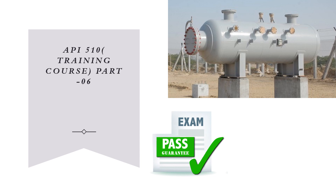Let's start with FPI 510. We are continuing with the API 510 and have completed a few chapters. Today we'll go for chapter number seven. There is one more chapter, chapter number eight, which is the final chapter, and after that we'll go for a calculation slide where all the mathematical calculations will be done.